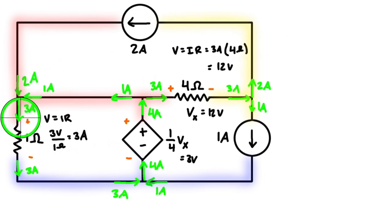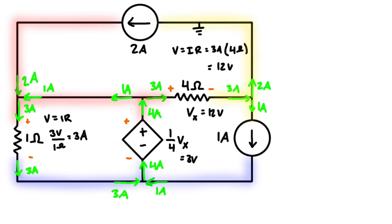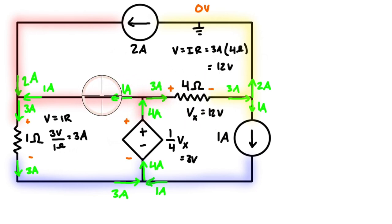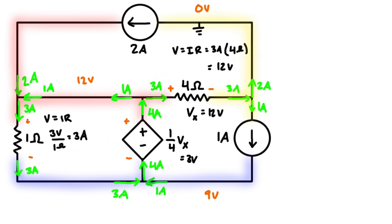It helps to assign a ground node. Setting the yellow node to zero volts, we jump up 12 volts across the four-ohm resistor, making the red node 12 volts. The voltage drop across either the one-ohm resistor or the dependent source is three volts, so going from the positive to negative side we drop three volts, making the blue node nine volts above ground — three volts less than the red node.